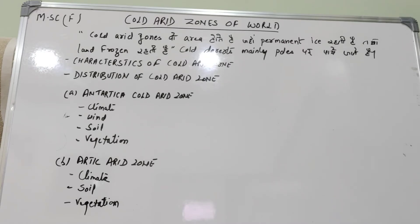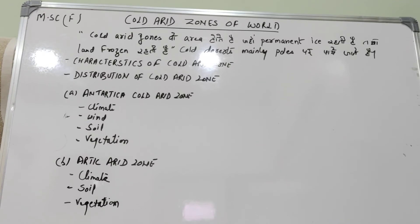Next is distribution of cold arid zones — यह कहाँ-कहाँ पर हैं। Cold deserts ज़्यादातर poles पर पाए जाते हैं। इनमें मुख्यतः Greenland, Arctic pole, North pole, और Antarctic ice caps शामिल हैं। Hudson Bay और Arctic Ocean का कुछ क्षेत्र भी शामिल है। इसके इलावा Himalaya की ऊँची चोटियाँ भी cold arid zone में आती हैं। South polar arid zone region Antarctica महाद्वीप में स्थित है।